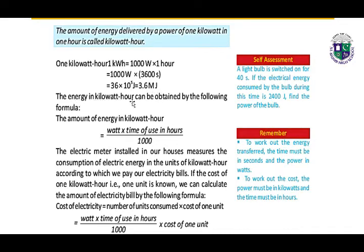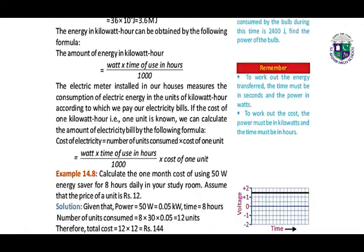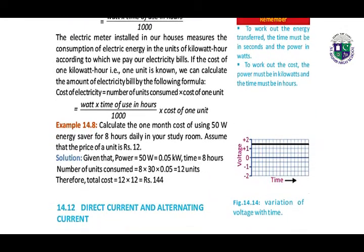The energy in kilowatt-hour can be obtained by the following formula — you have to learn this formula properly. The electric meter installed in our houses measures the consumption of electric energy in units of kilowatt-hours, according to which we pay our electricity bills.